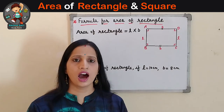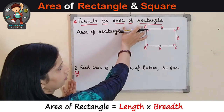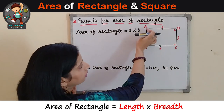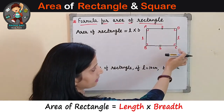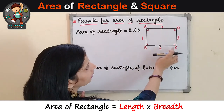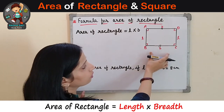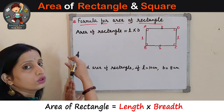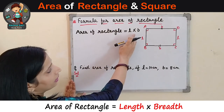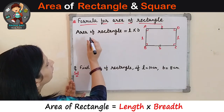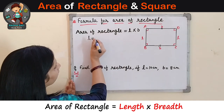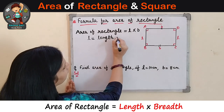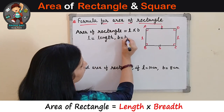Now we will learn how to find out the area of a rectangle. In a given rectangle ABCD, the sides AB and CD are the length, and sides BC and AD are the breadth. The formula to find out the area of a rectangle is L multiplied by B, where L stands for length and B stands for breadth.